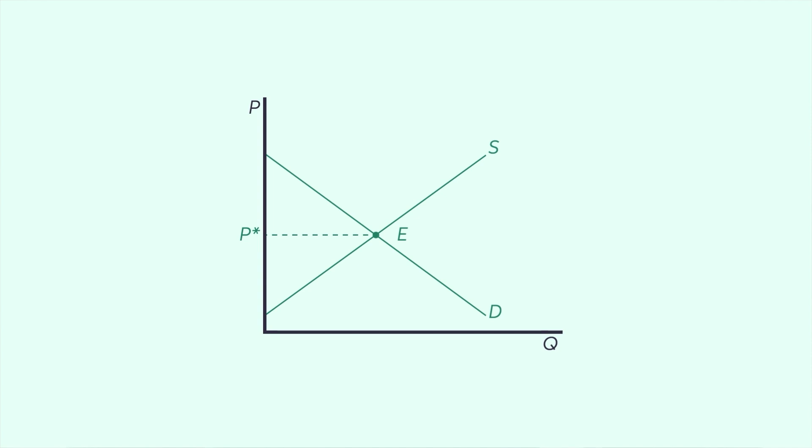When we trace the equilibrium point on the quantity axis, the x axis, we can see the quantity equilibrium, also known as Q star.